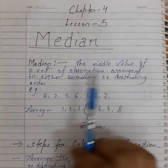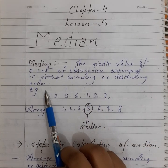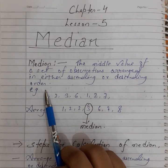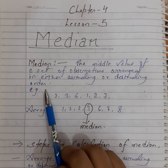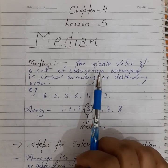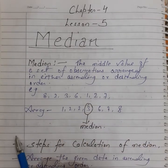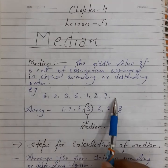Median is the middle value of a set of observations arranged in either ascending or descending order. For finding the median, first you have to arrange the data in either ascending or descending order — that means you first have to make an array of that data — and the middlemost observation of that array is called the median.